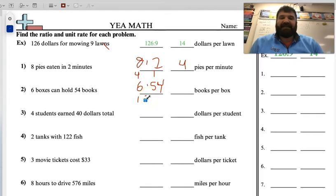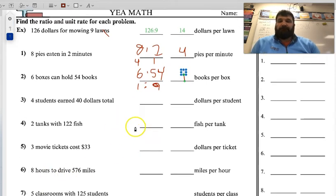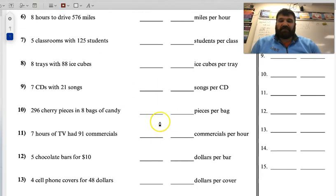And I know 6 times 6 is 36, or 6 times 10 is 60, so I would assume 6 times 9 would be 54. So I would say that there would be 9 books per box, okay? Keep working on this problem.